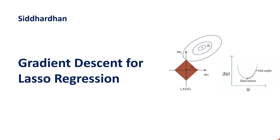Hello everyone, I am Siddharthan. Currently we are in the seventh module of our ANS-ON machine learning course, and this seventh module is all about building machine learning models from scratch. In my previous videos I explained the intuition and math behind a lasso regression model, and in today's video we will be discussing what gradient descent for lasso regression is and how it works. Once we understand all these things, in the next video we can move on to build the lasso regression model from scratch in Python. Let us get started.